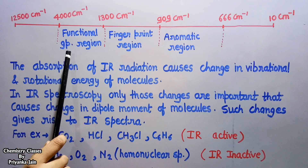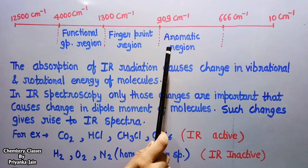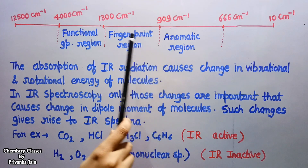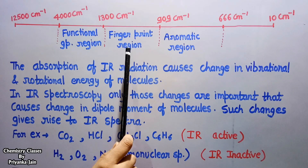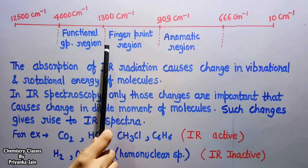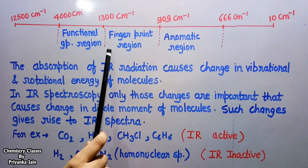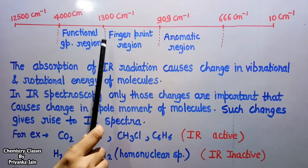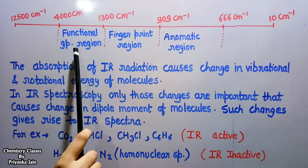The region from 909 to 666 cm⁻¹ is known as the aromatic region, because aromatic groups absorb IR radiation here. The region from 1,300 to 909 cm⁻¹ is known as the fingerprint region, because it is unique to every molecule — every molecule gives a unique or characteristic spectrum here that cannot be matched with any other molecule. This fingerprint region is very complex and is most important for identification studies.